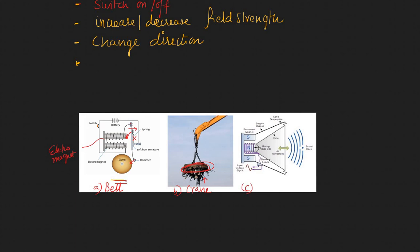A third example is a speaker. When you get music through a 3.5 mm jack, signals are passed through wires. There is a magnetic effect on the coil, and due to its interaction with the inner cone — which has a magnet at its end — when the solenoid's magnetic field changes, the central magnet oscillates depending on the change in the magnetic field in the coil. That sends vibrations, and you hear them as sound. A speaker is also a good example of an electromagnet.